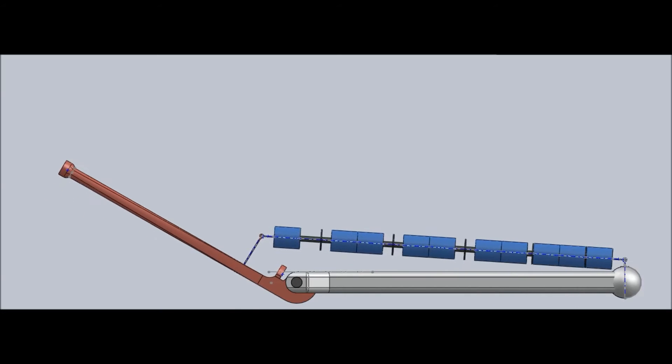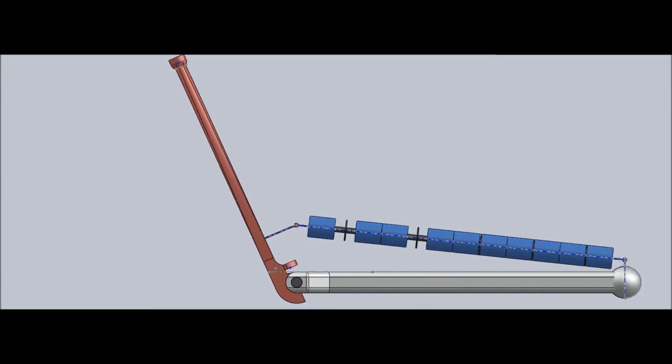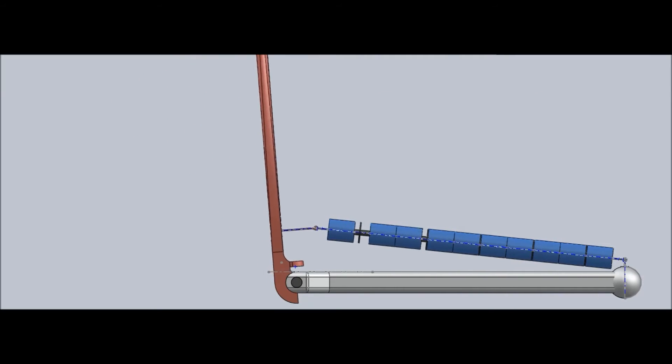With a number of sarcomeres actuated consecutively, the full flexion is achieved. The more sarcomeres in series, the better the resolution.